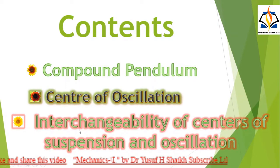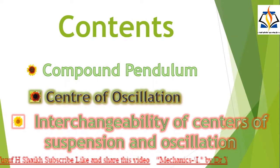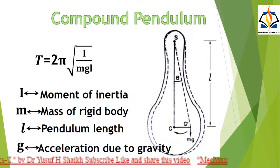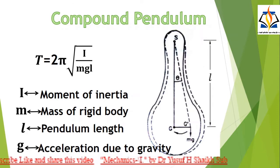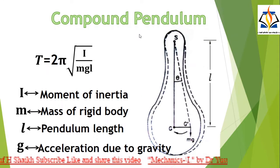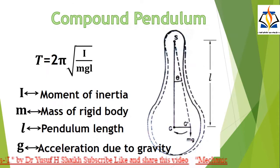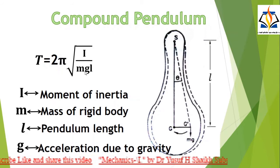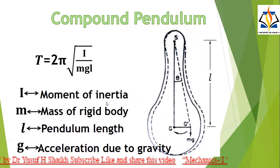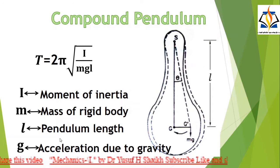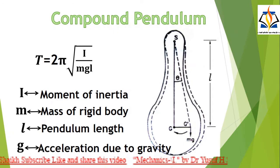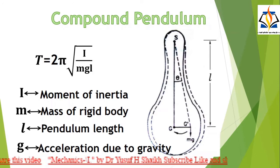The topics covered are: center of oscillation and interchangeability of centers of suspension and oscillation. A rigid body capable of oscillating in a vertical plane about a horizontal axis passing through any point of it is called a compound pendulum. The motion of a compound pendulum is simple harmonic and its periodic time is given by T = 2π√(I/MgL), where I is the moment of inertia of a rigid body about the axis passing through the point of suspension, M is the mass of the rigid body, and L is the length of the pendulum.